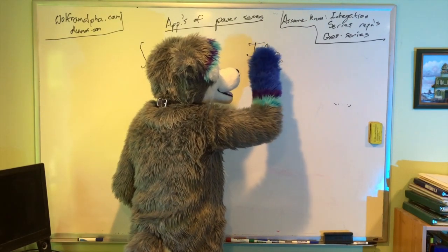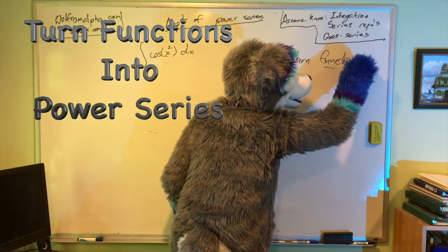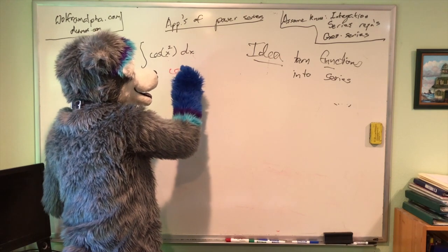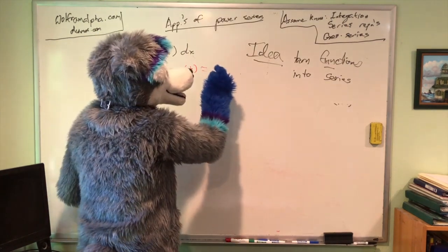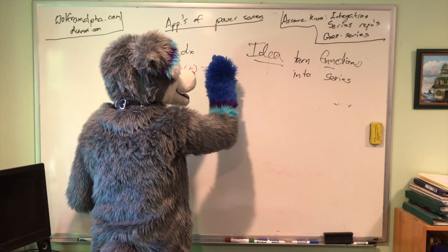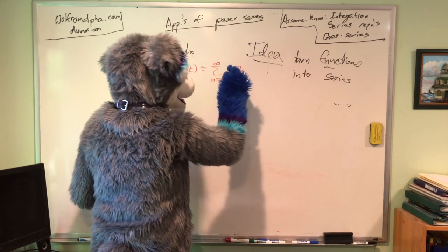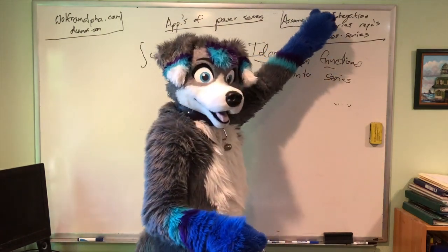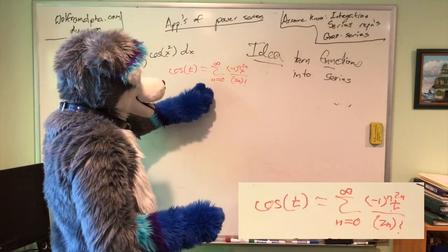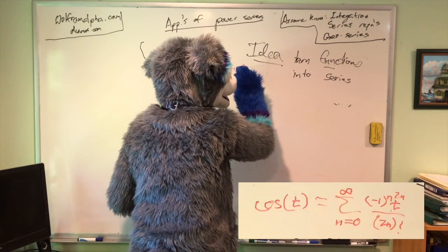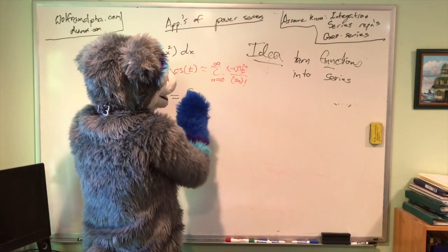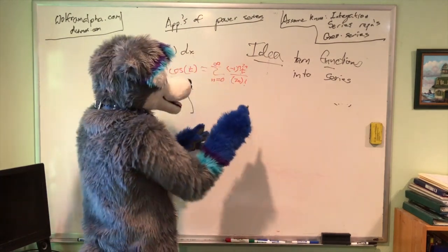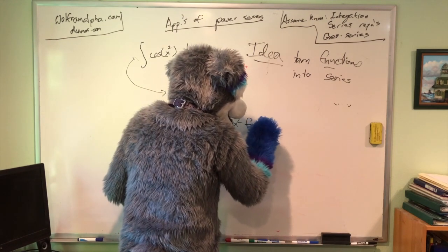The idea in all these applications is to turn functions into power series. For example, if you knew that the cosine of T — I'll use a different variable, call it T — is the sum from n equals zero to infinity of negative one to the n times T to the 2n over the 2n factorial. Then this is the integral of this, where T is substituted with x squared.